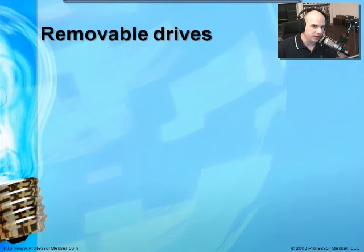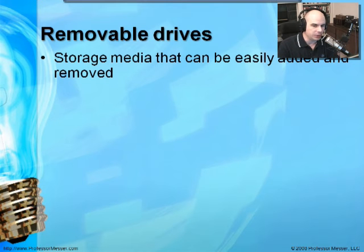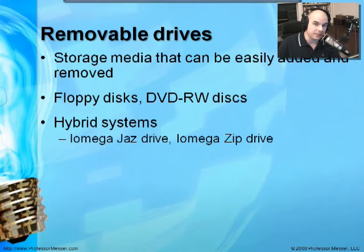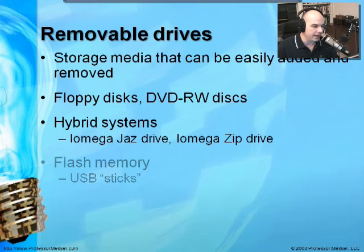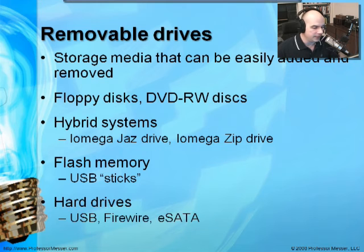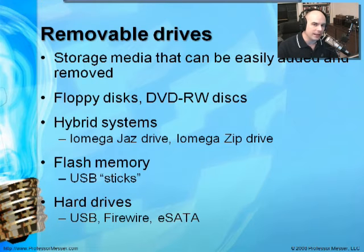When the A-Plus Certification talks about removable drives, it means storage media that can be easily added and removed from a system. That could be many different types of components — floppy disks, DVD read-write disks, hybrid systems like a Jaz drive or a Zip drive from a company called iOmega, flash memory drives we call USB sticks, and hard drive types that are removable. There are all different ways to plug those in and different formats that may or may not be available for your system.